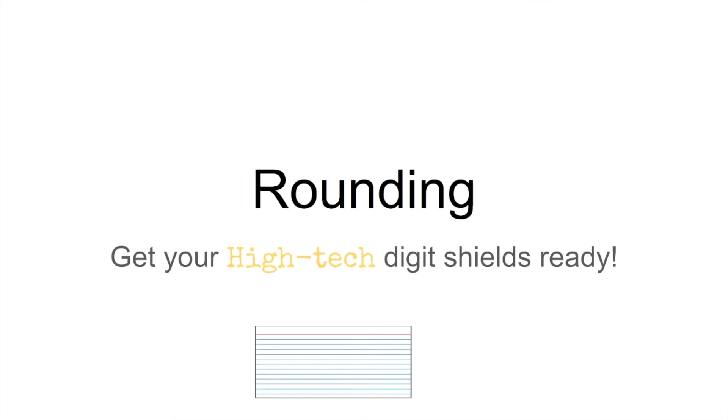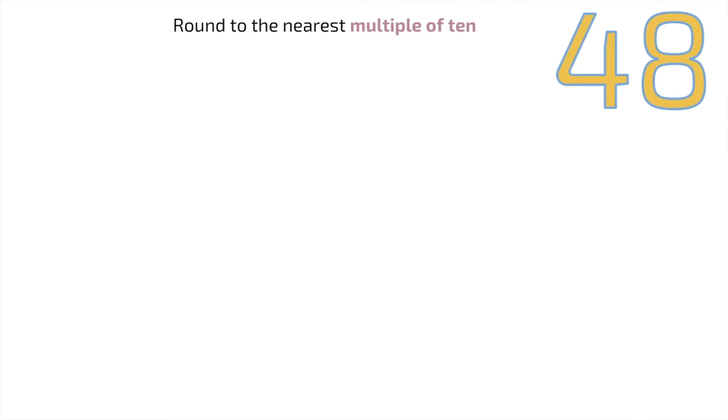We're going to be rounding, so get your high-tech digital shields ready—those are index cards. We're going to round to the nearest multiple of 10. I'm going to underline everything up to the tens place, and in this case that's the whole number.